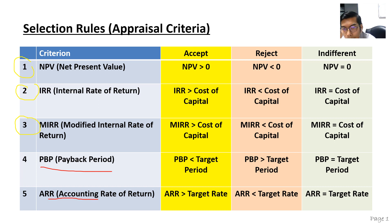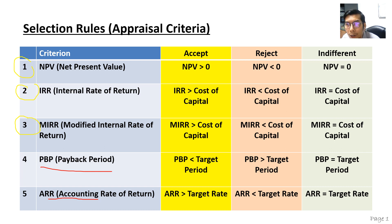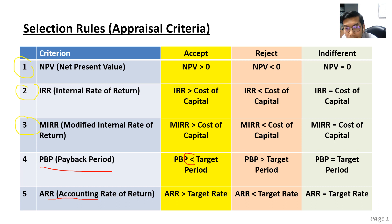For payback period, we are looking at the target period to get back your invested capital. We are not talking about the period that you're going to get profit — it's the period that you can get your invested money back. For example, if you invest 10 million, how long it takes for you to get back your 10 million — that's what we define as payback period. We accept the option if the payback period is less than the target period.